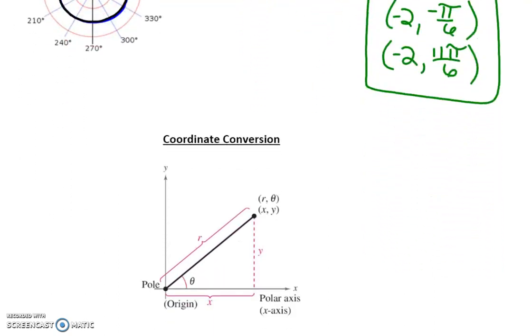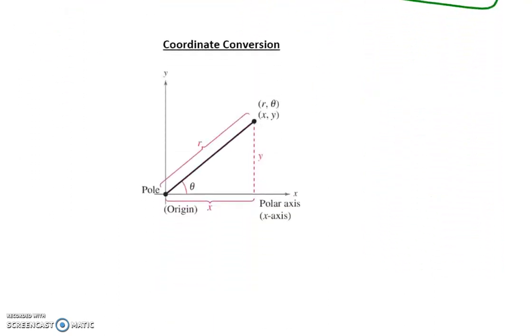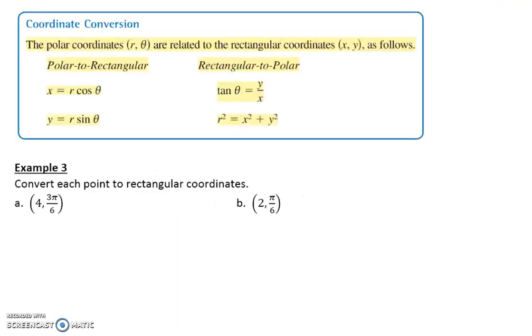So, again, you can look at these, the coordinate conversion. Your R is like your X. Your angle measure, whether it's in degrees or radians, is your Y value. And so notice that they call the origin the pole. The X axis is now called the polar axis. And so when you hear some of those terms or see them in a problem, that's what they mean.